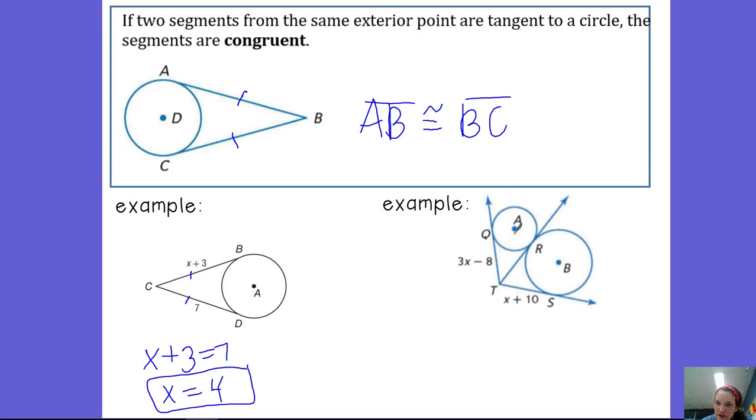In the second example, we have two separate circles. If we're looking at circle A, segment QT and segment RT are going to be congruent, so segment QT would be congruent to segment RT, because they're both tangent to circle A, and they intersect at point T.